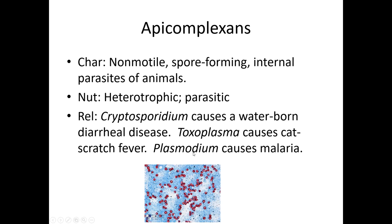The final apicomplexan is one of the leading causes of death for human beings worldwide — and that is malaria. Malaria is caused by the plasmodium parasite. Plasmodium gets into human beings because a mosquito bites us and spits some plasmodium into us, and then the life cycle continues. It has a very complex life cycle, only living part of its life in humans, but it does some really horrible things to our bloodstream.